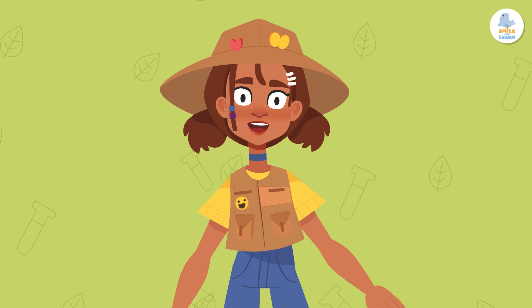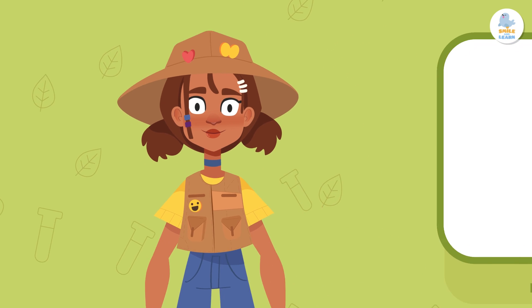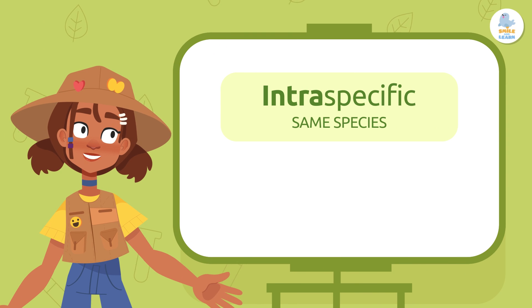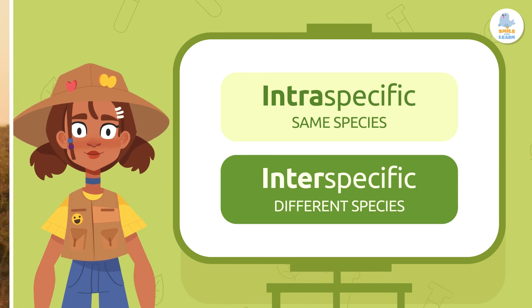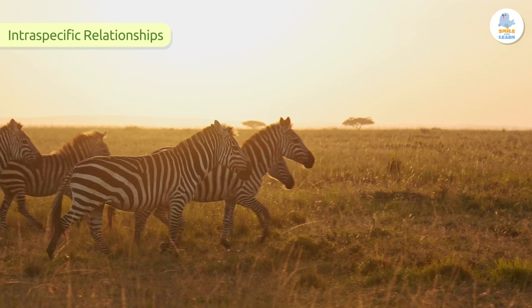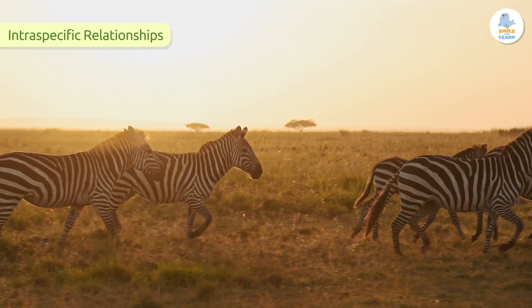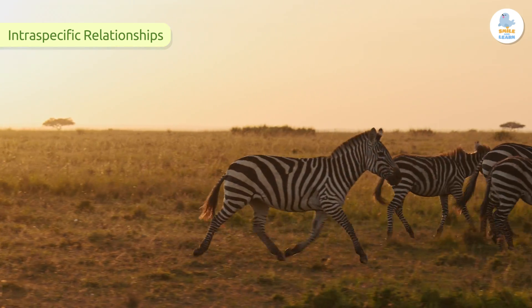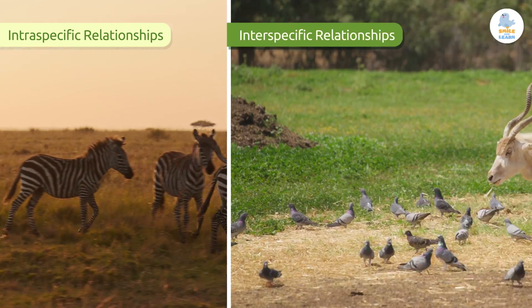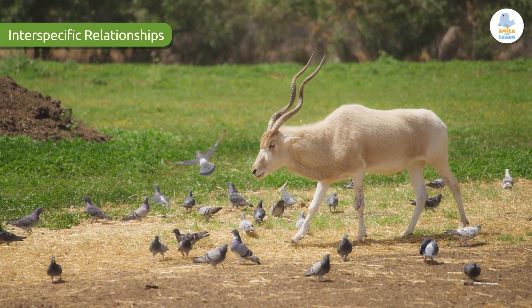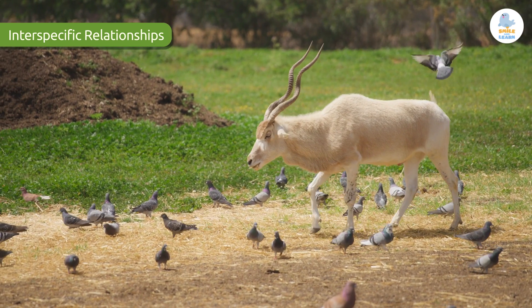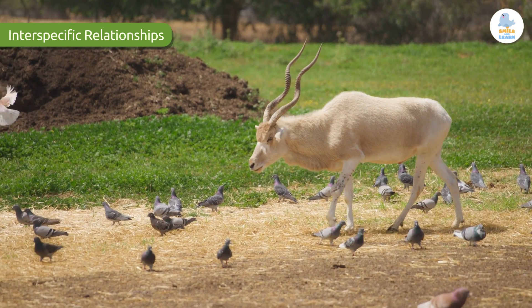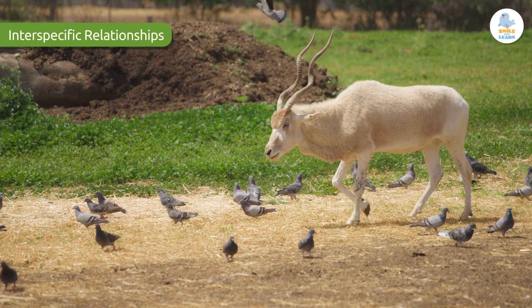There are two types of relationships: intraspecific and interspecific. In intraspecific relationships, the living things are of the same species. In contrast, in interspecific relationships, the living beings involved are of different species.